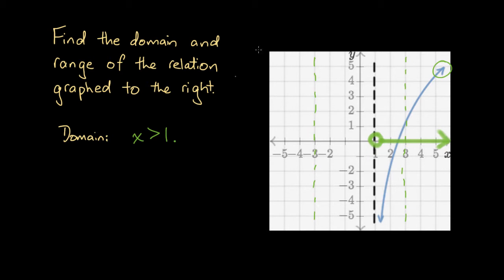Let's consider the range. The range is the set of all possible outputs for this relation, or another way of saying that is all possible y values. If we were to draw dotted lines to the left and right of any one of these values shown on the y-axis on our graph, that dotted line would intersect with the curve. Let's choose an arbitrary value, y equals 4. So if we draw a dotted line through y equals 4 to the left and right, we do get an intersection with the curve. That means there is an x value that we could input into this relation which would yield y equals 4 as a valid output. Because this is true for all the values specified on this y-axis, all these points are part of the range.